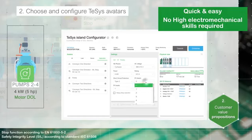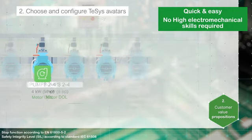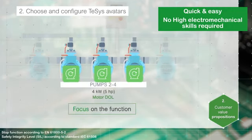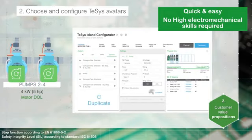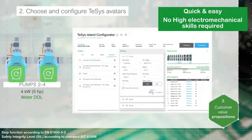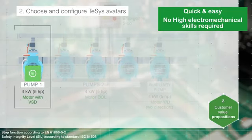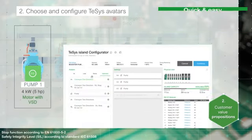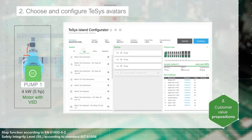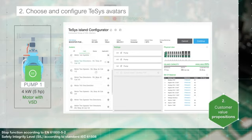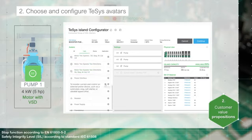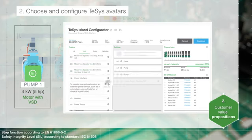Set the number of process variable switches, which receive signals from switches such as float or proximity switches. Copy the avatar in case of similar loads or applications. To monitor and control a motor with a variable speed drive, select the power interface with IO avatar.